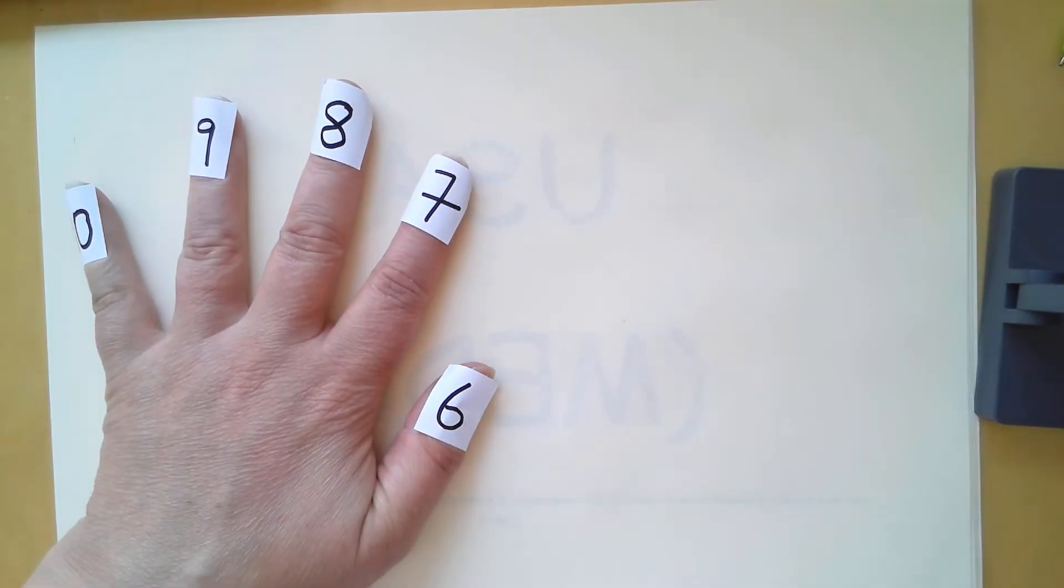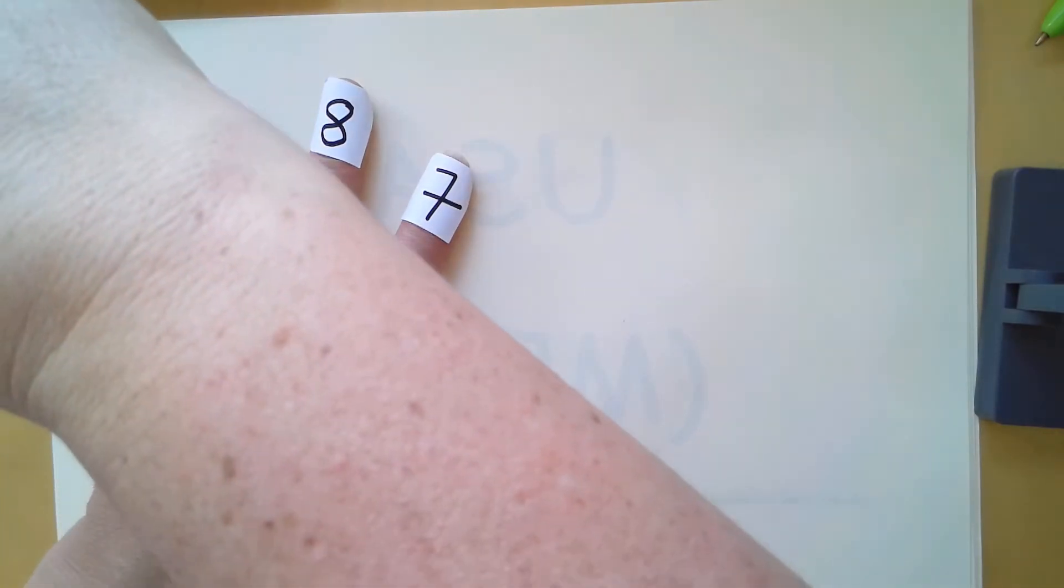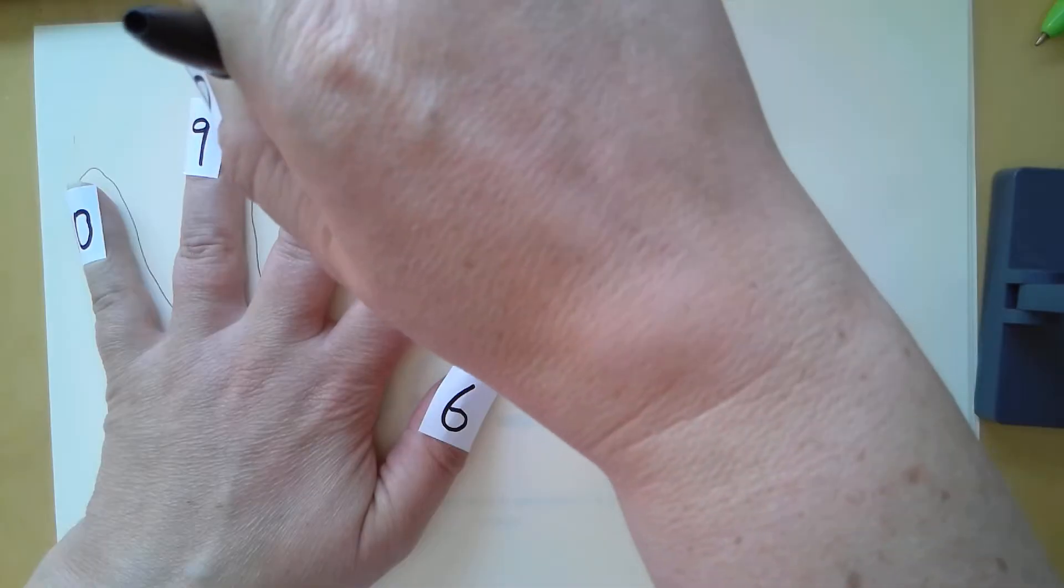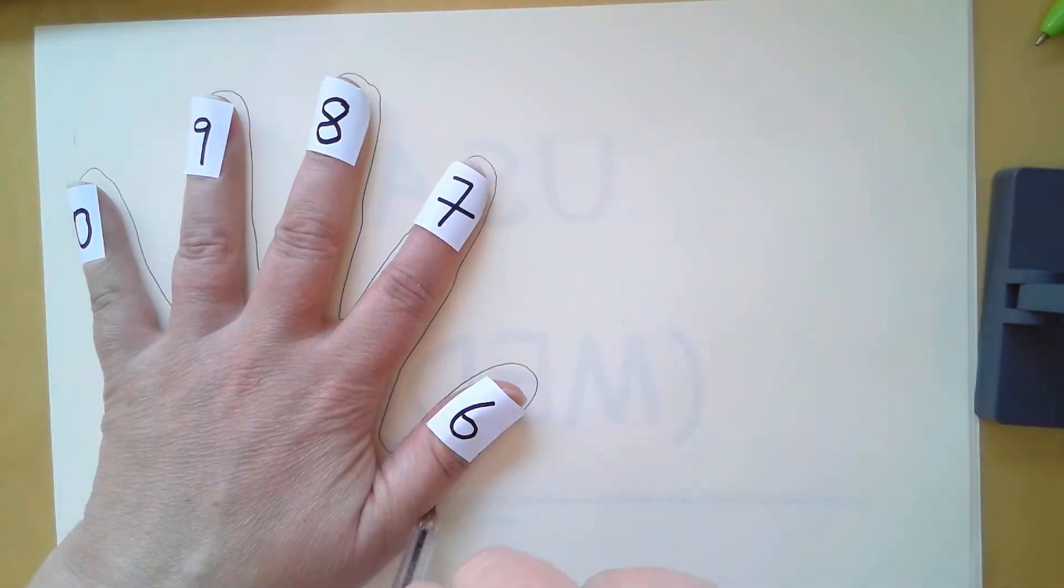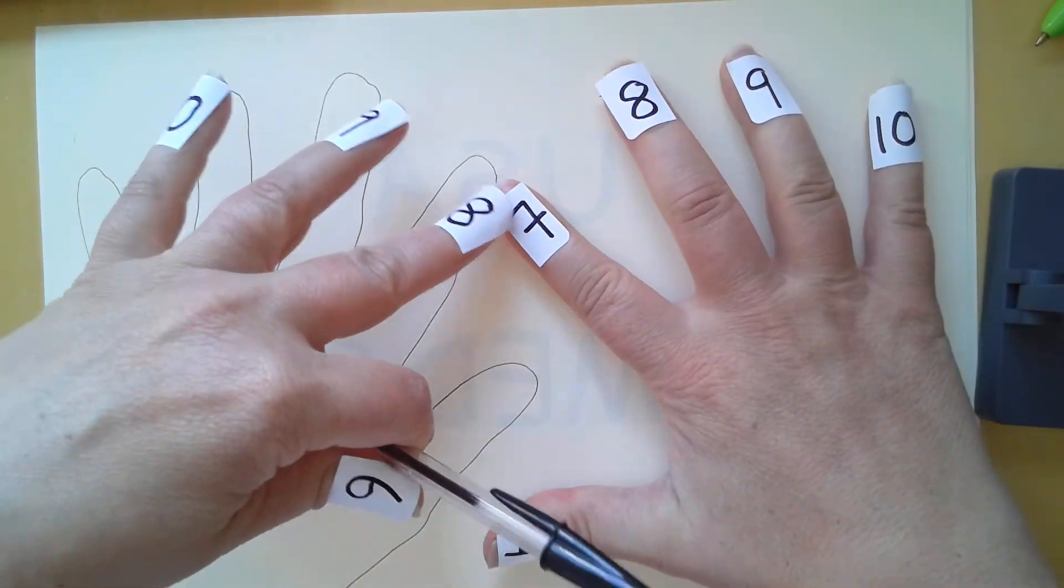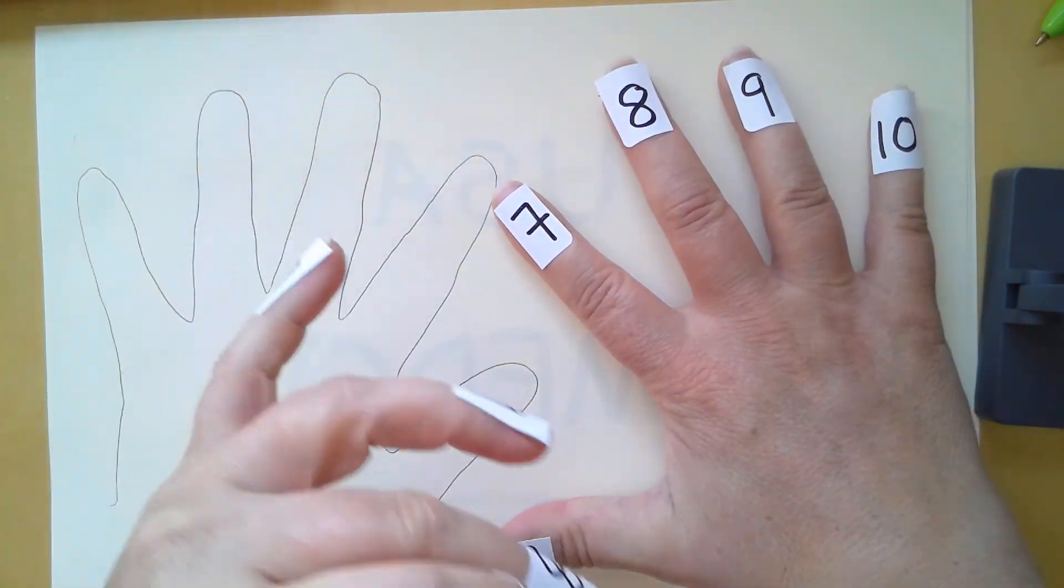First of all, we're going to take a sheet of paper and draw around our hands. Make sure that these two fingers here are touching.